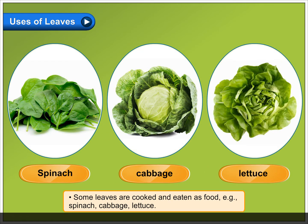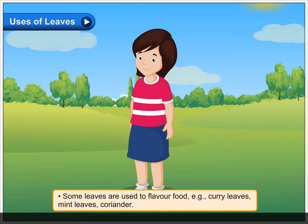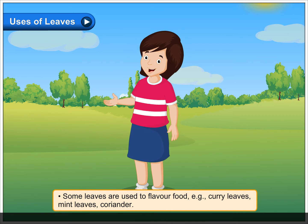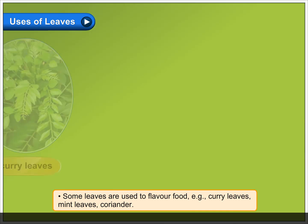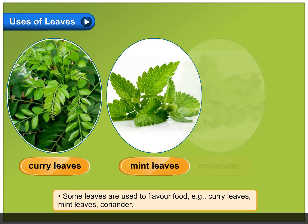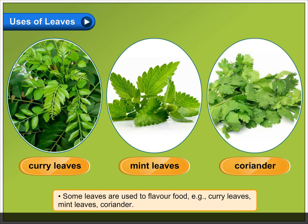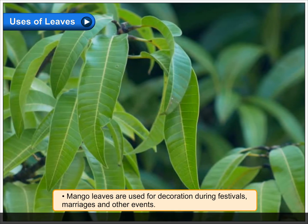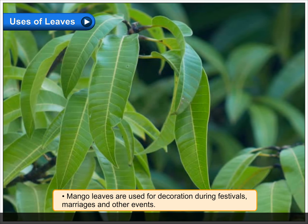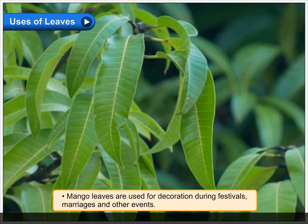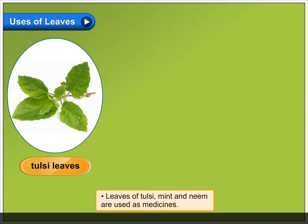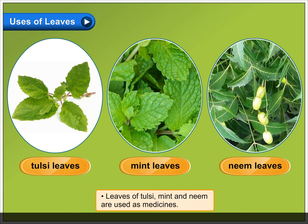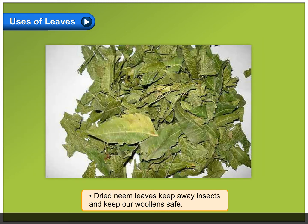Some leaves are used to flavor food, for example curry leaves, mint leaves, and coriander. Mango leaves are used for decoration during festivals, marriages, and other events.